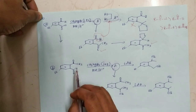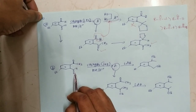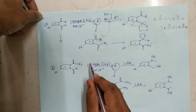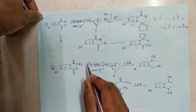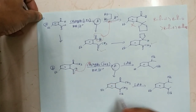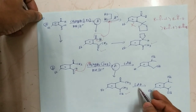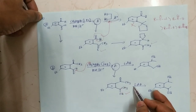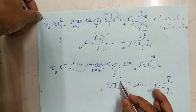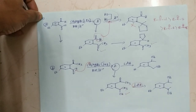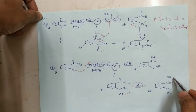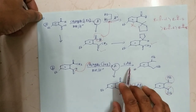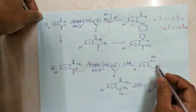In option B, between ketone and aldehyde, aldehyde is more reactive, so the aldehyde is attacked by methyl magnesium bromide and we get this product. Then in the reduction reaction with lithium aluminum hydride, the ketone is reduced to an alcohol. Here we get a secondary alcohol group, but in the given option a primary alcohol group is shown, so this option is also incorrect.